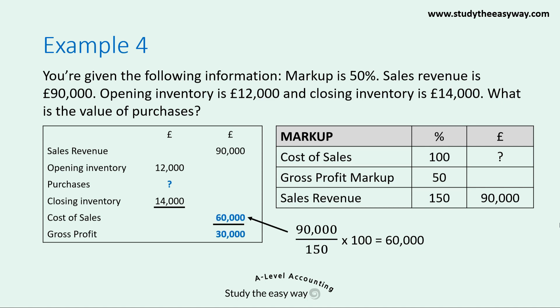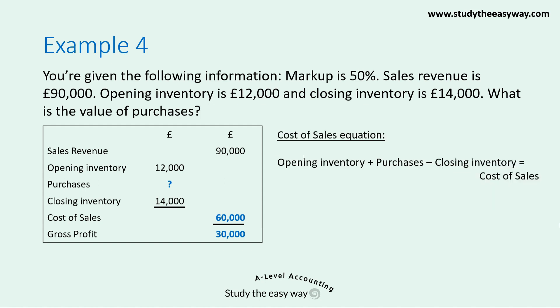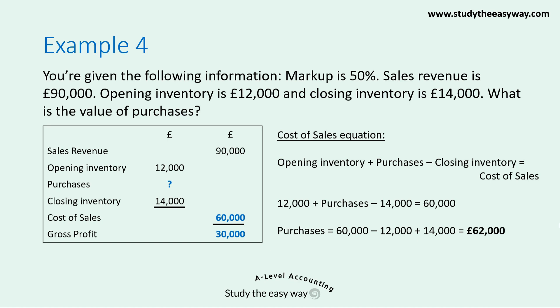We can now partially complete the trading account: cost of sales is £60,000, and deducting that from sales revenue of £90,000 gives gross profit of £30,000. Step two: to calculate the missing purchases figure, we use the cost of sales equation — opening inventory plus purchases minus closing inventory equals cost of sales. Rearranging: purchases equals £60,000 minus £12,000 plus £14,000, giving a purchases figure of £62,000.